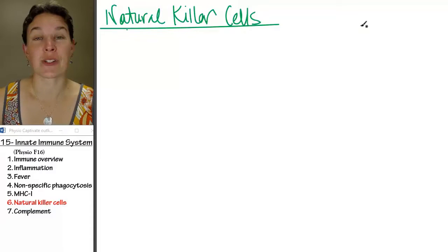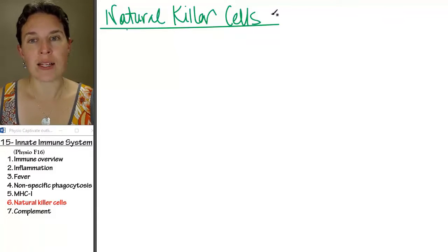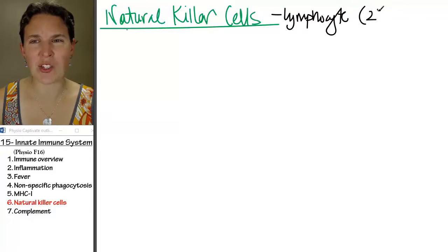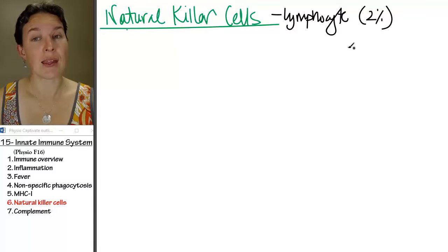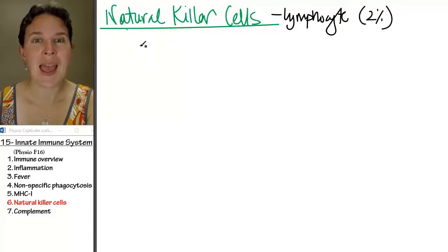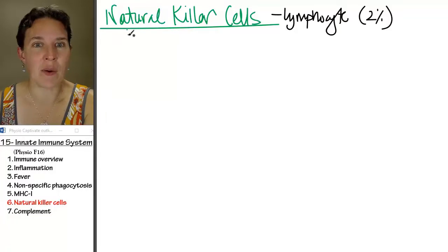You got to have the natural killers. Natural killer cells are a type of lymphocyte. Of all lymphocytes, they make up about 2% of the lymphocyte population. They're not very common, but here's why we're talking about them right now.